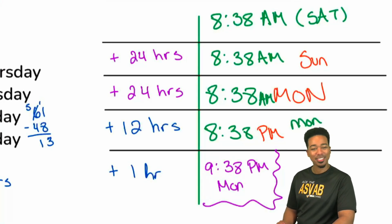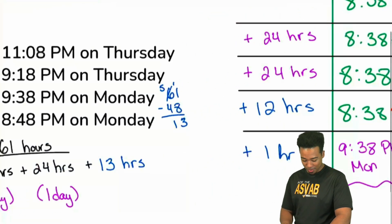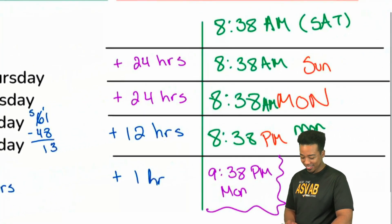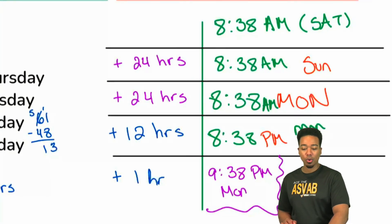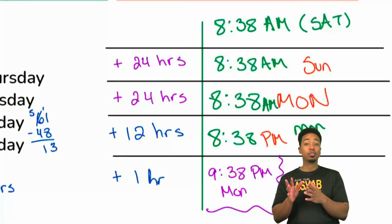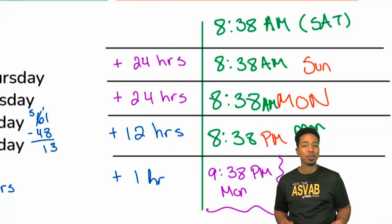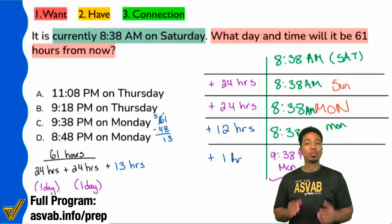The plus 13 may have thrown you off, but again, 13 is just going to be 12 and 1. So you can add the 12 hours, make that easy, then add one more hour for sure.